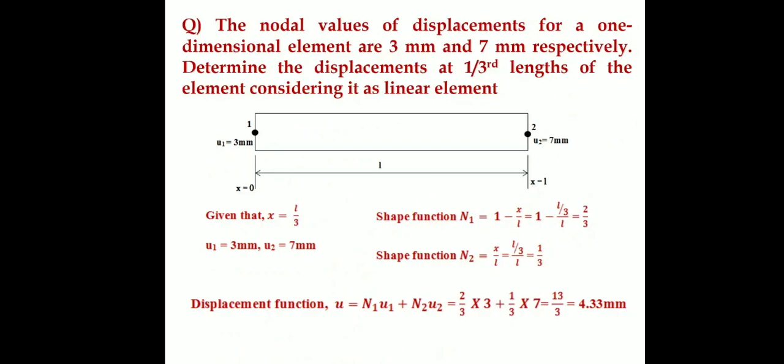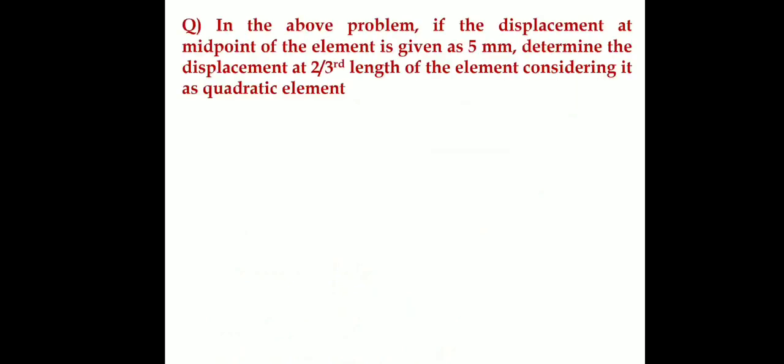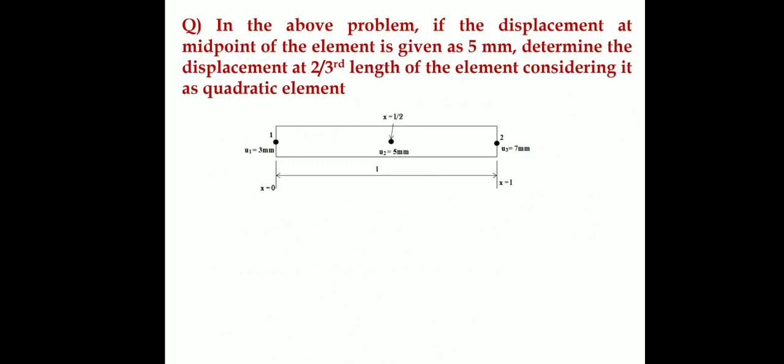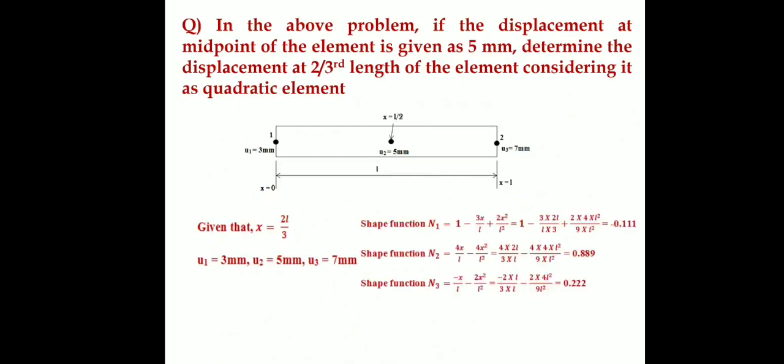Substituting: u = (2/3)·3 + (1/3)·7 = 2 + 7/3 ≈ 4.33 mm. In the second case, if the displacement at midpoint is given as 5 mm with u1 = 3 mm and u3 = 7 mm, we use x = L/2 and substitute into the quadratic element shape functions to solve.